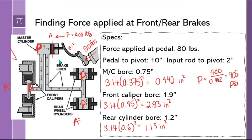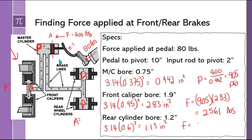At the front brakes, we take that 905 psi system pressure and multiply by the caliper bore area of 2.83 inches squared, giving a massive 2,561 pounds of force at the front brakes — most of your braking happens at the front. At the rear brakes, same system pressure, but smaller cylinders with 1.13 inches squared give a smaller output force. When you have all these specs, you can figure out the force at every brake location, front and rear.